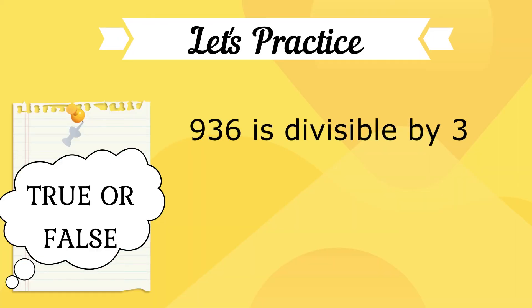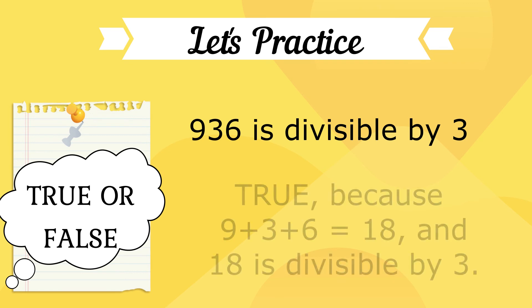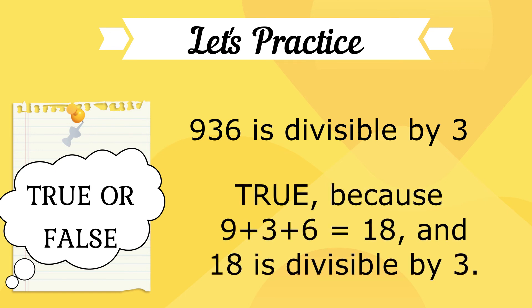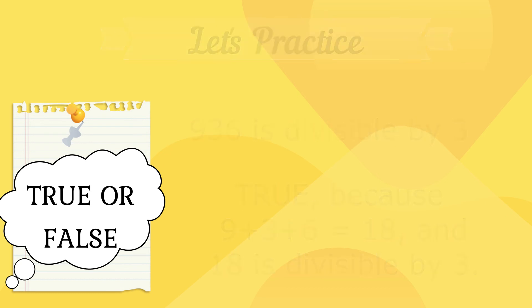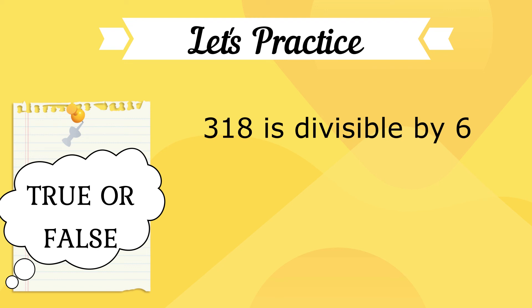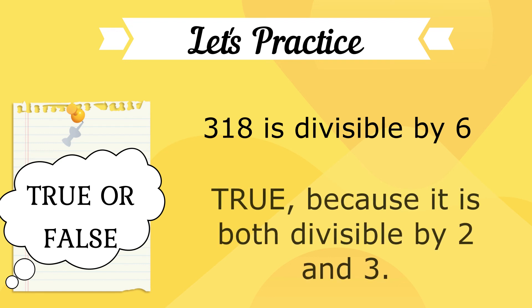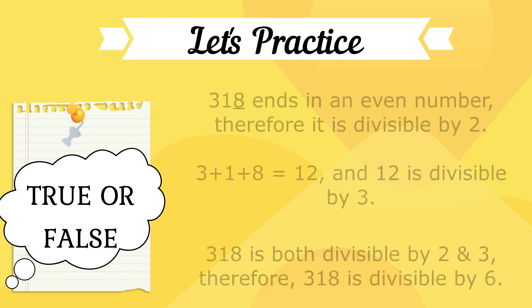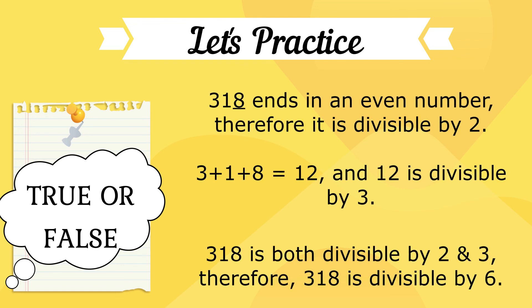Let's practice! True or false? 936 is divisible by 3. That is true, because 9 plus 3 plus 6 equals 18, and 18 is divisible by 3. True or false? 318 is divisible by 6. True again, because it is both divisible by 2 and 3. 318 ends in an even number, so it is divisible by 2. The sum of the digits is 12, which is also divisible by 3. Therefore, it is divisible by 6.